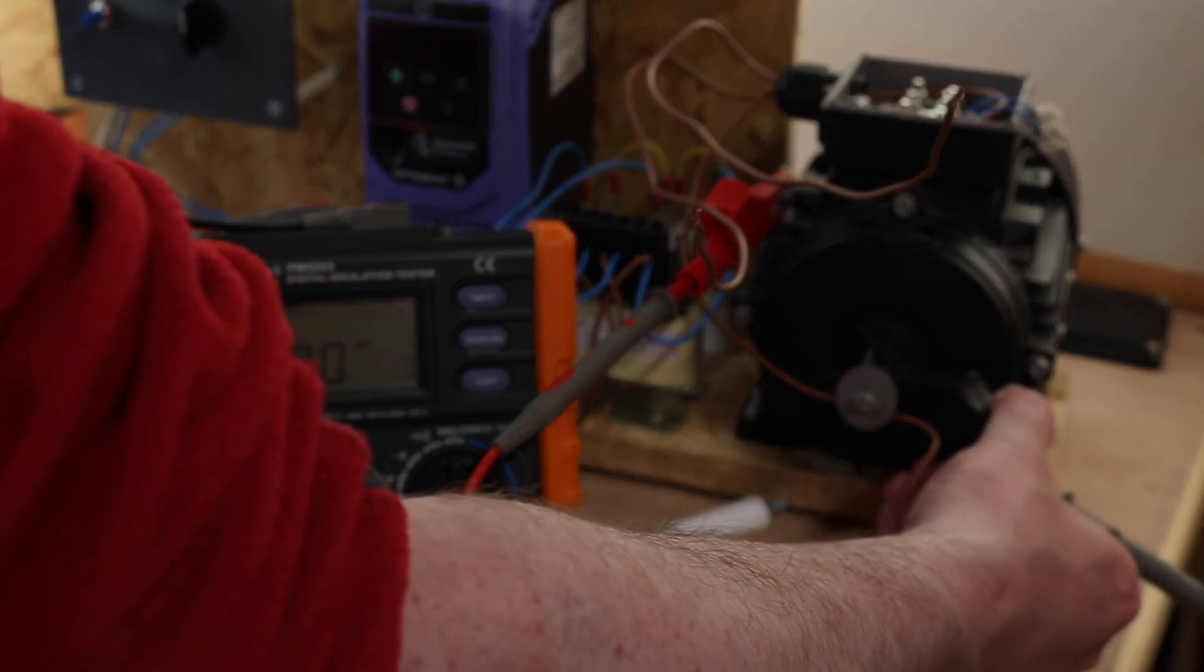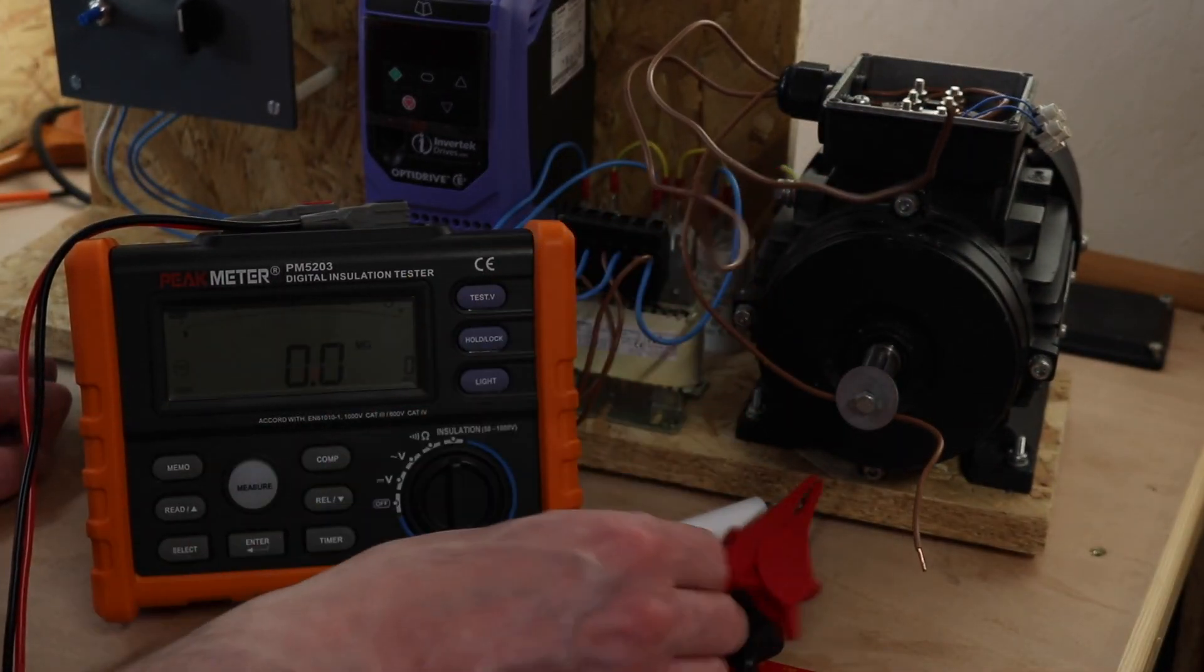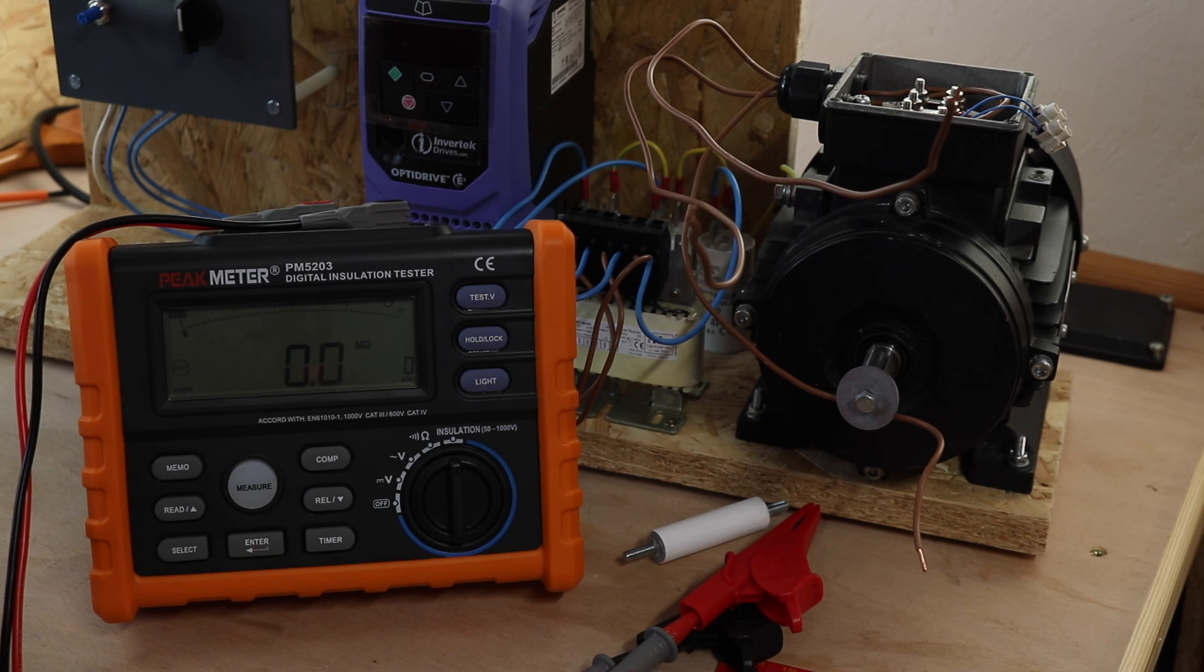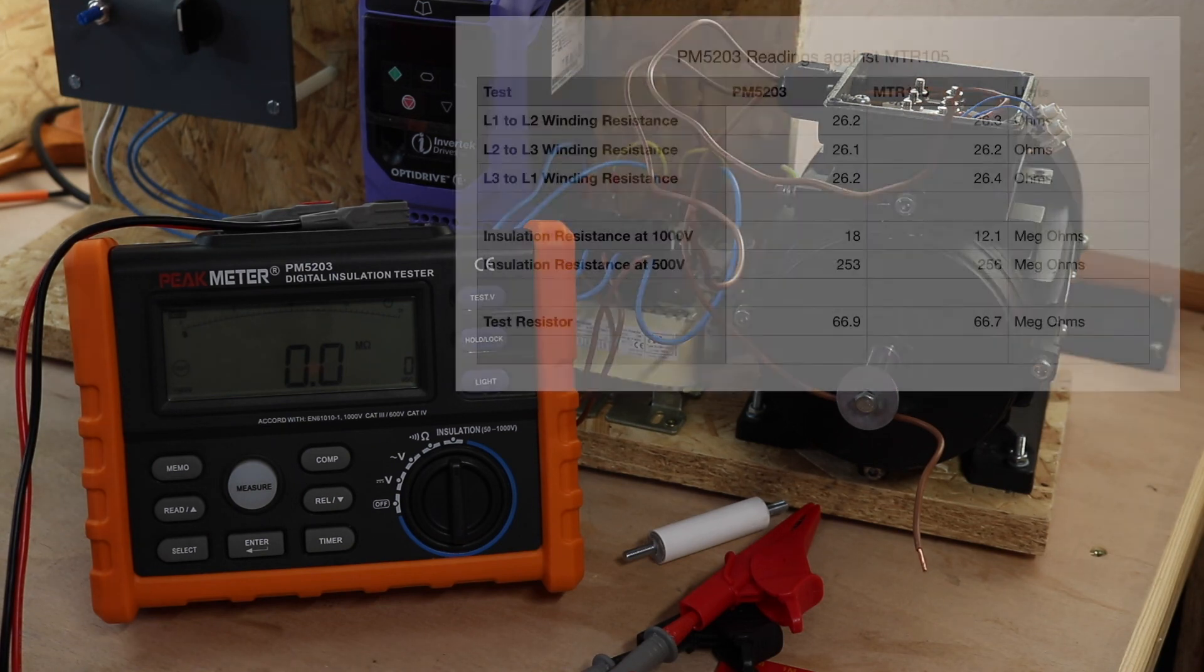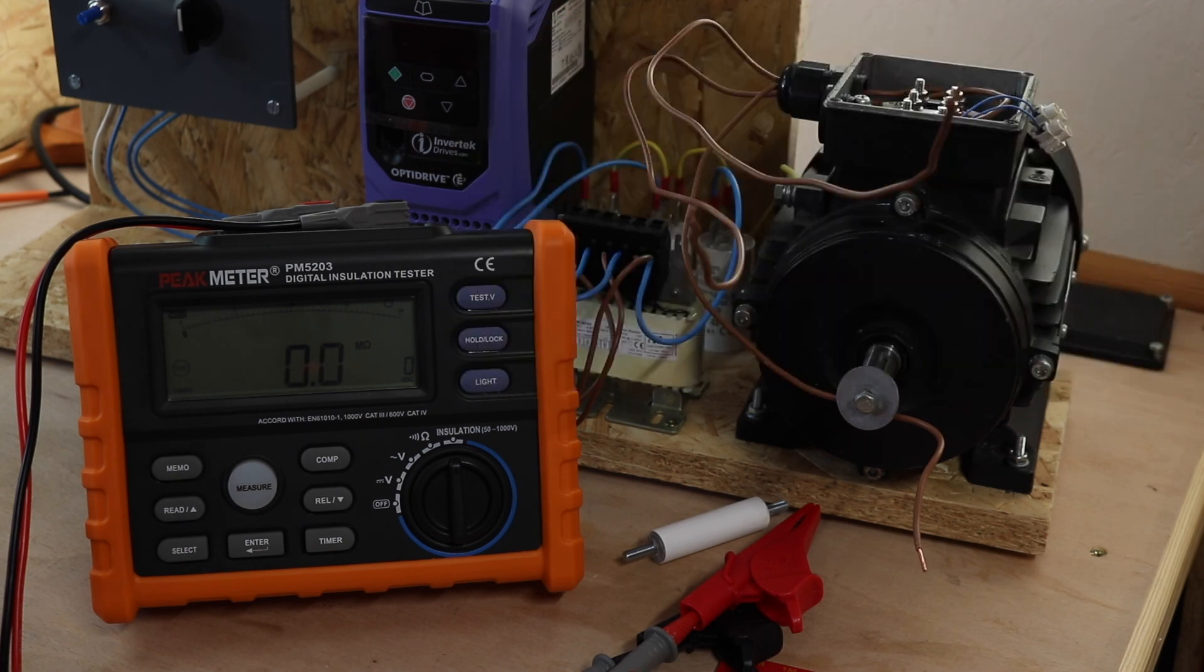And that is pretty much how you test a small three-phase motor with a Peak Meter insulation tester. As I say, I've got the readings from the MTR105 for this motor, so I'll put a little table up, put those next to the readings from this, but they are pretty much there or thereabouts.